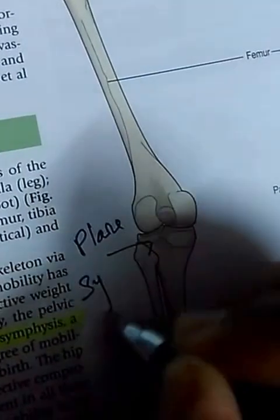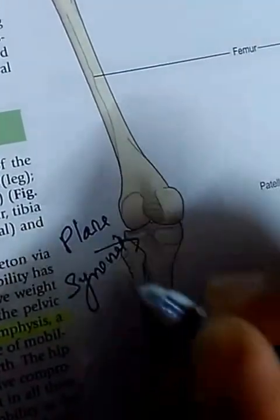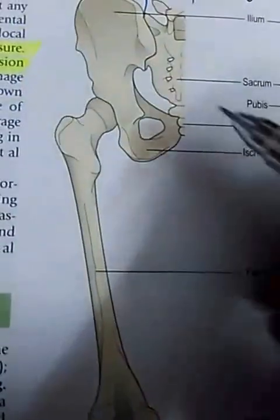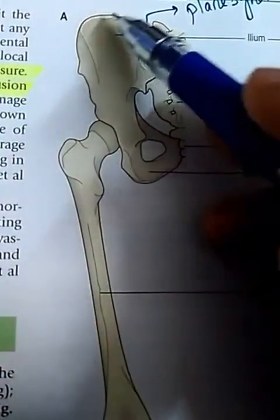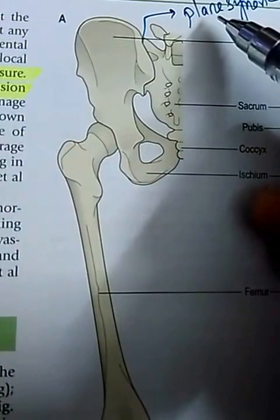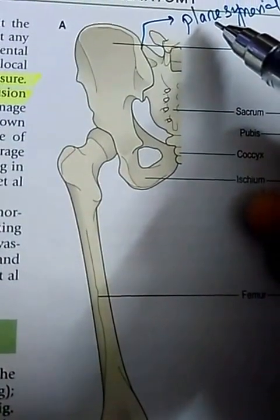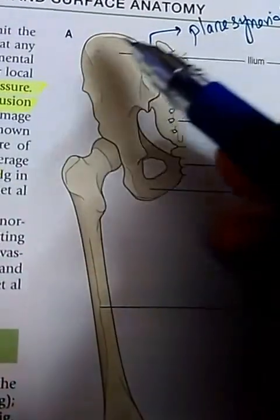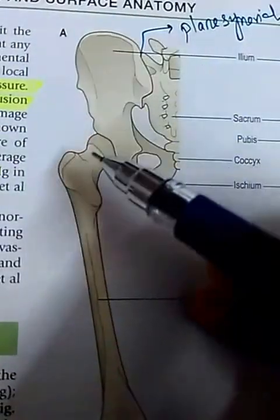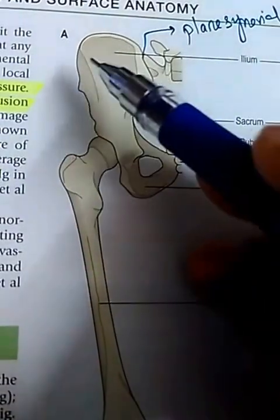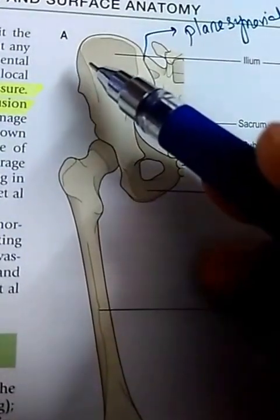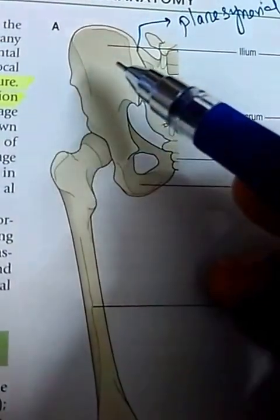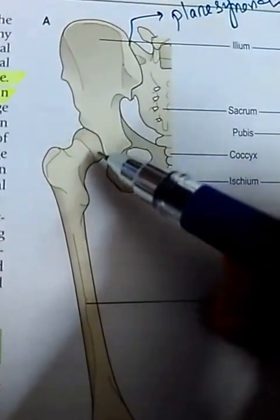The highest point of the iliac crest lies at the level of L4. The tubercle of the iliac crest, although not shown here, lies at the level of L5.